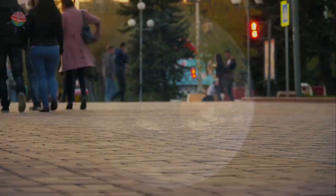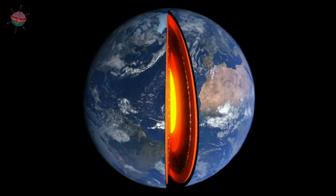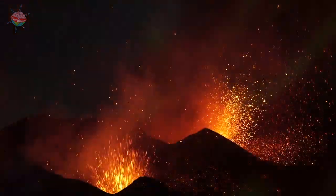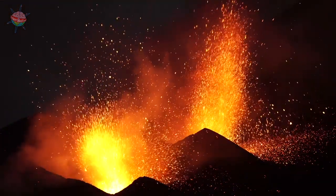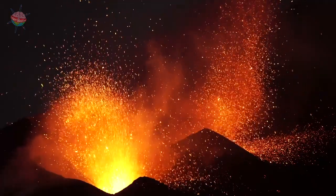Underneath the crust is a layer called the mantle. This area contains molten rock called magma. At times, the magma forces its way through the crust. This can cause volcanoes.